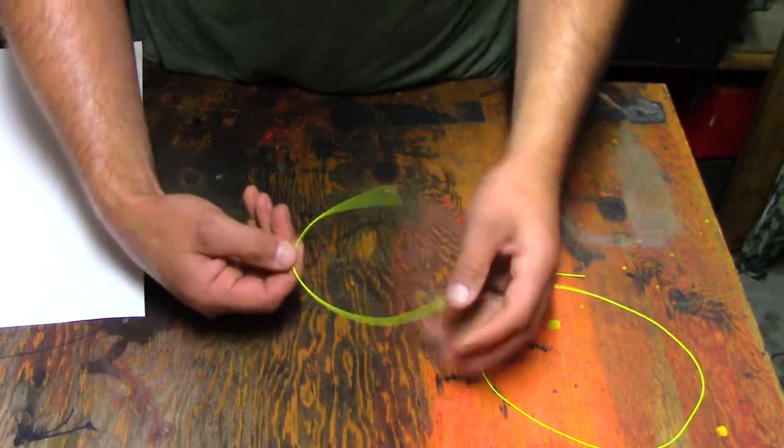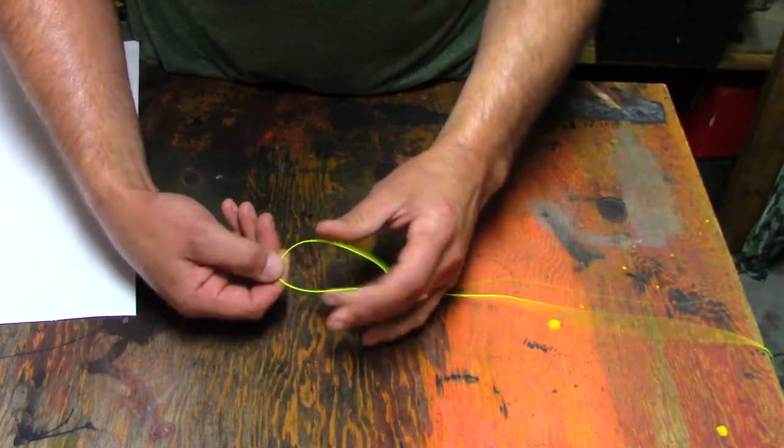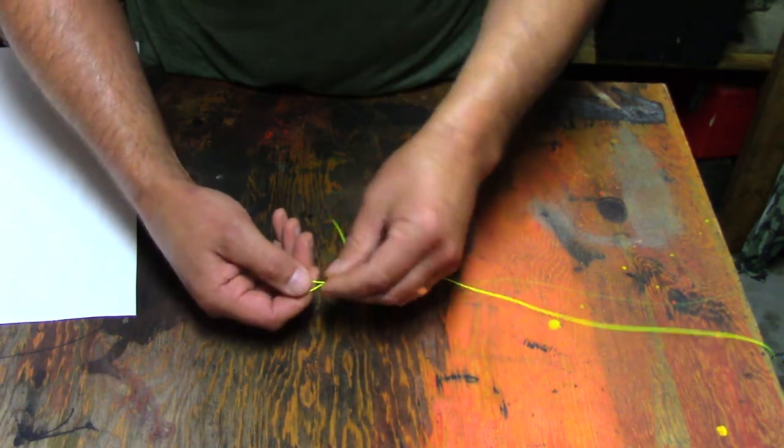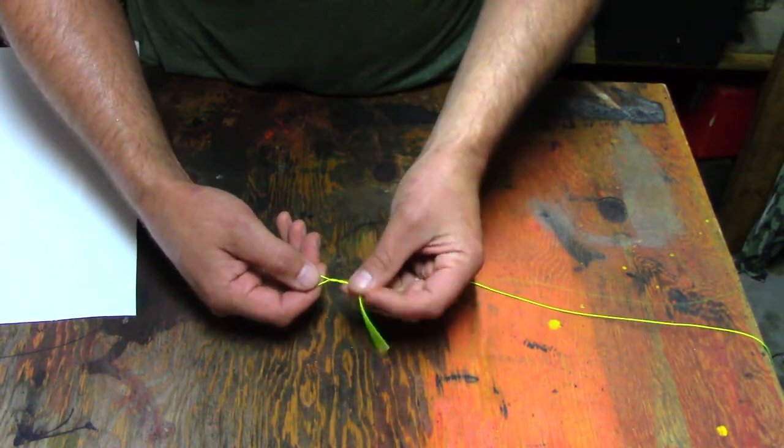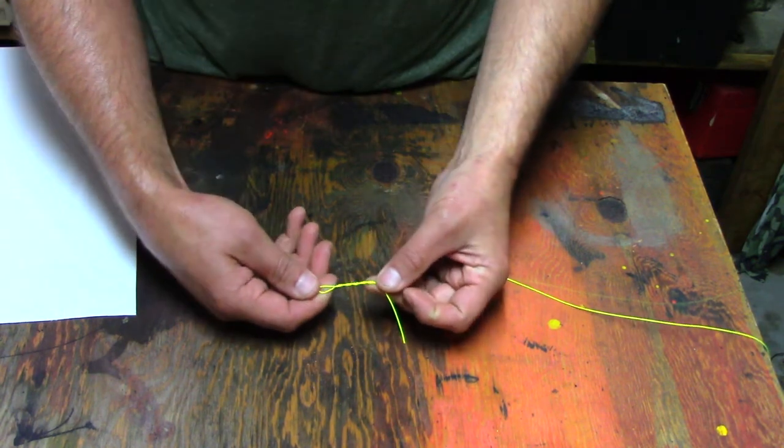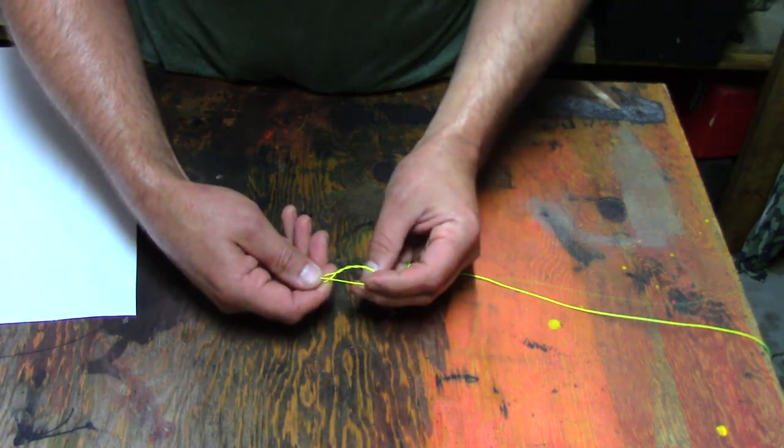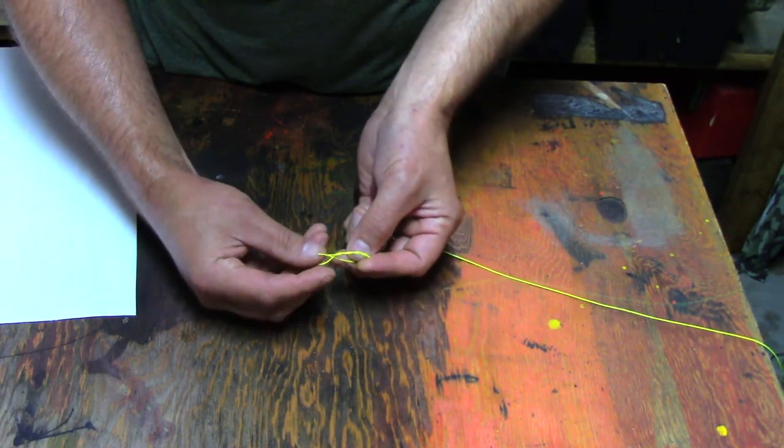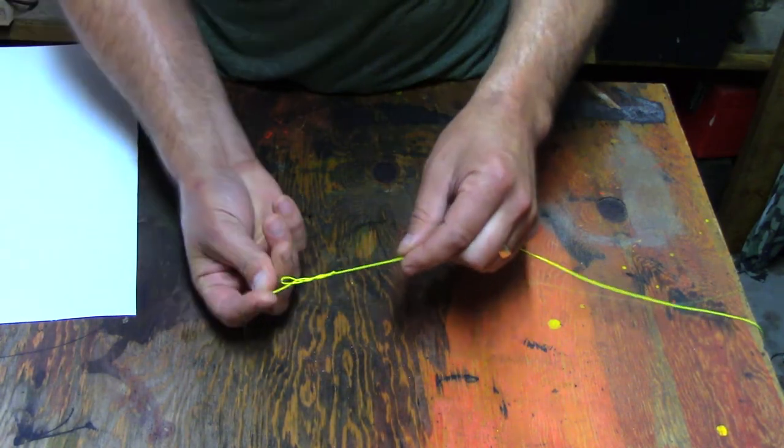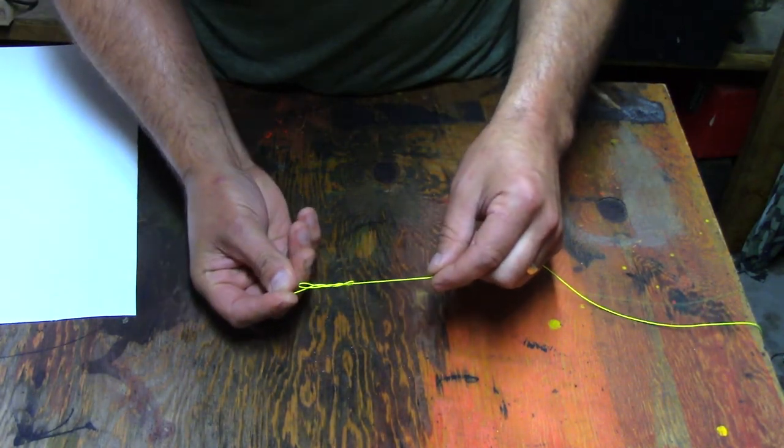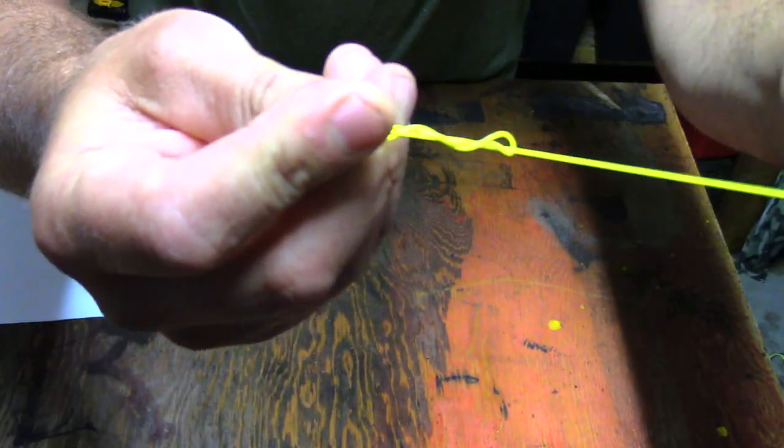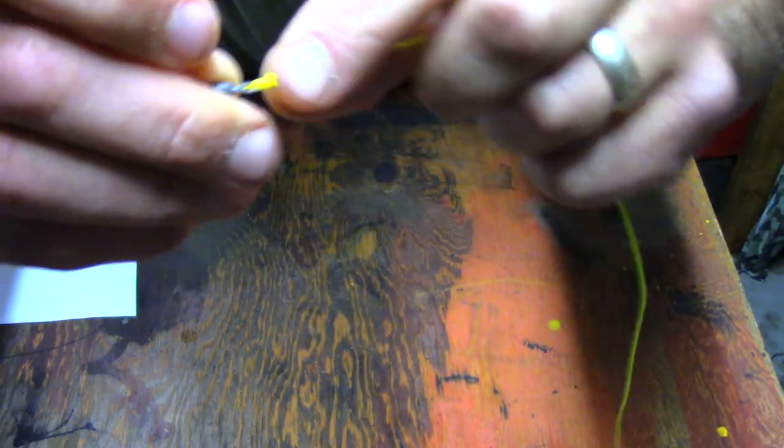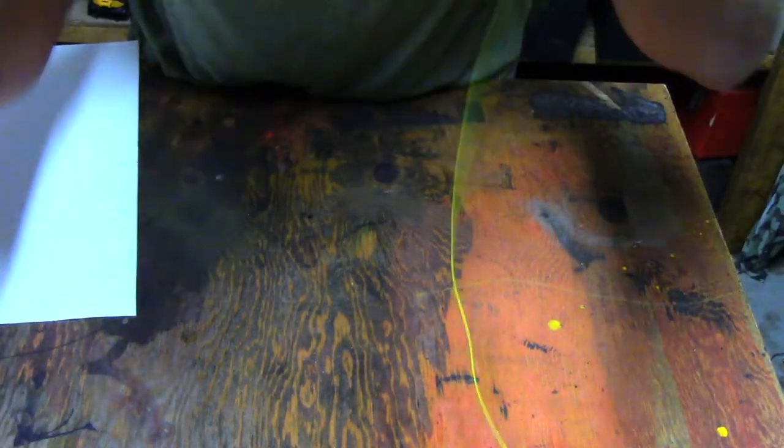The clinch knot is a knot where you've got your long piece and your short piece. You put it through the eyelet. You wrap the short piece around the long piece one, two, three or four times. Then you put the short piece through the hole that's near your swivel, or whatever eyelet you're dealing with. Then you hold it with your fingers and you just pull that tight against the swivel.